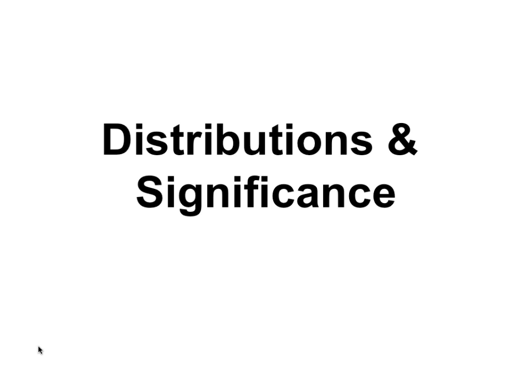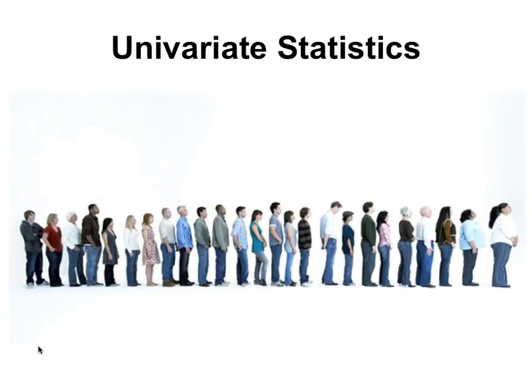We'll dive into distributions and significance, because this is underlying all of statistics. The first thing you typically have to deal with is a distribution over a population. It might be a single variable in this population — a bunch of people, 30 or so. We could choose a variable like height. If we were looking at the height of this population, we would be doing univariate statistics. We could also measure weight, scores on a test, or intelligence — each of those is a variable.